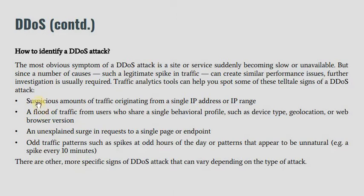There are certain ways to identify a DDoS attack. One sign is a suspicious amount of traffic originating from a single IP address or IP range. If a certain amount of traffic comes from a single IP or IP range that is flooding the network, then there is a chance that a DDoS attack is occurring.